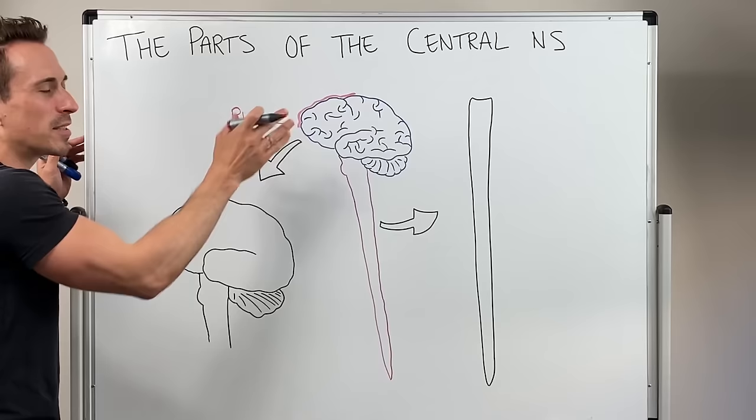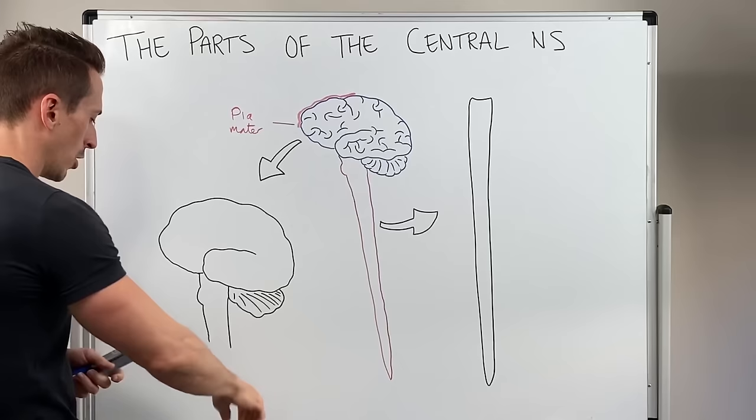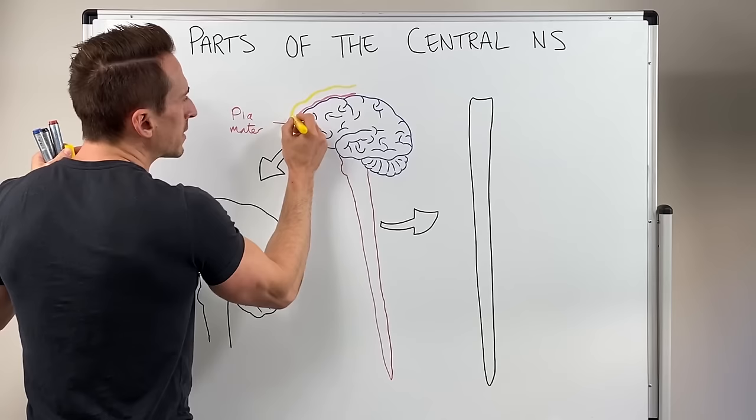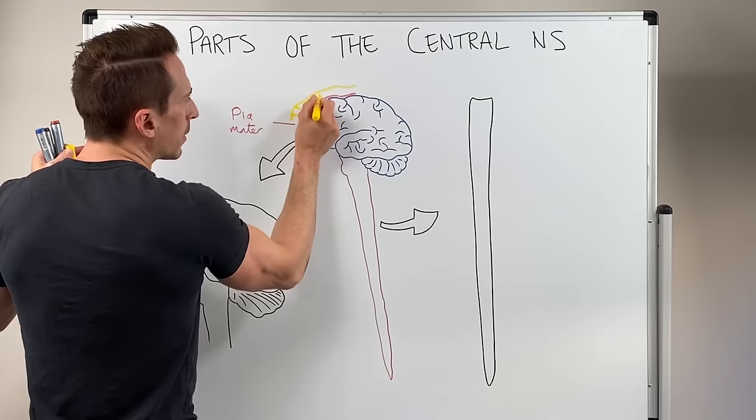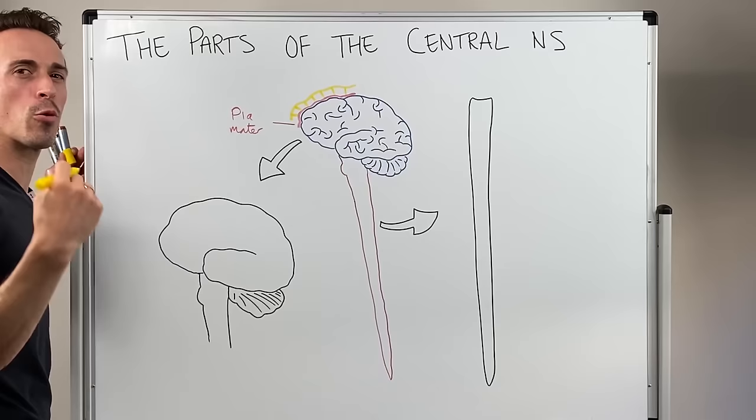It's the soft mother, basically it's like tissue paper that's stuck to the brain itself. On top of the pia mater we've got another layer that has these projections down to the pia mater that look a little bit like a spider's web, and this is called the arachnoid mater or spider mother.